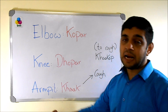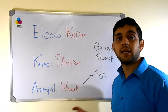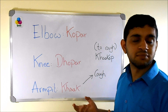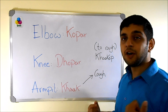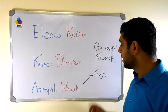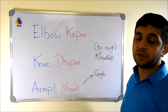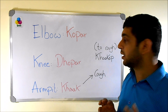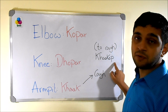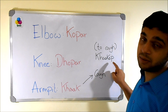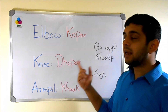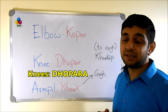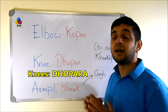Armpit is 'khak' — like khaki. Khak has one more meaning in Kokani: khak also means to cough. So khak is the noun form, and the verb form if you want to say 'to cough' is 'khakab'. Elbow is 'koper', knee is 'dhopar', and the plural of knee — knees — is 'dhopara'. Add '-ra' there.